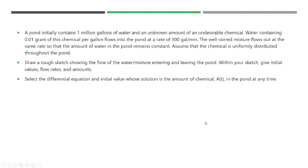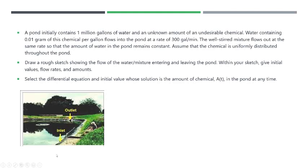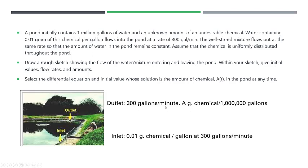We're going to draw a rough sketch showing the flow of water and mixture entering and leaving the pond, giving initial values, flow rates, and amounts. I just took a picture from online somewhere that has an outlet and an inlet. Assume that everything is well mixed from the inlet to the outlet. So we know at the inlet we have 0.01 grams of chemical per gallon and is flowing in at a rate of 300 gallons per minute.